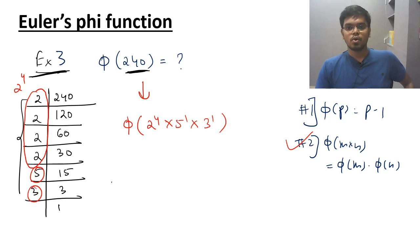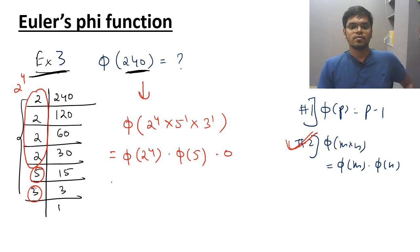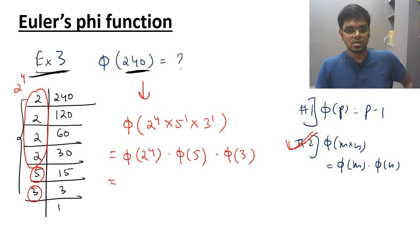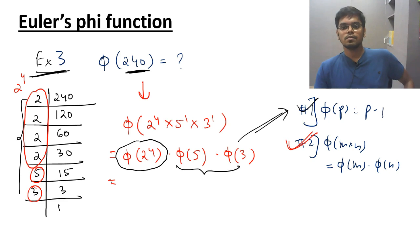Using property 2, I can split the terms: phi of 240 equals phi of 2 to the power 4, times phi of 5, times phi of 3. For phi of 5 and phi of 3, use property 1: 5 minus 1 and 3 minus 1. But for the first term, phi of 2 to the power 4, there is a problem — we need a new property.